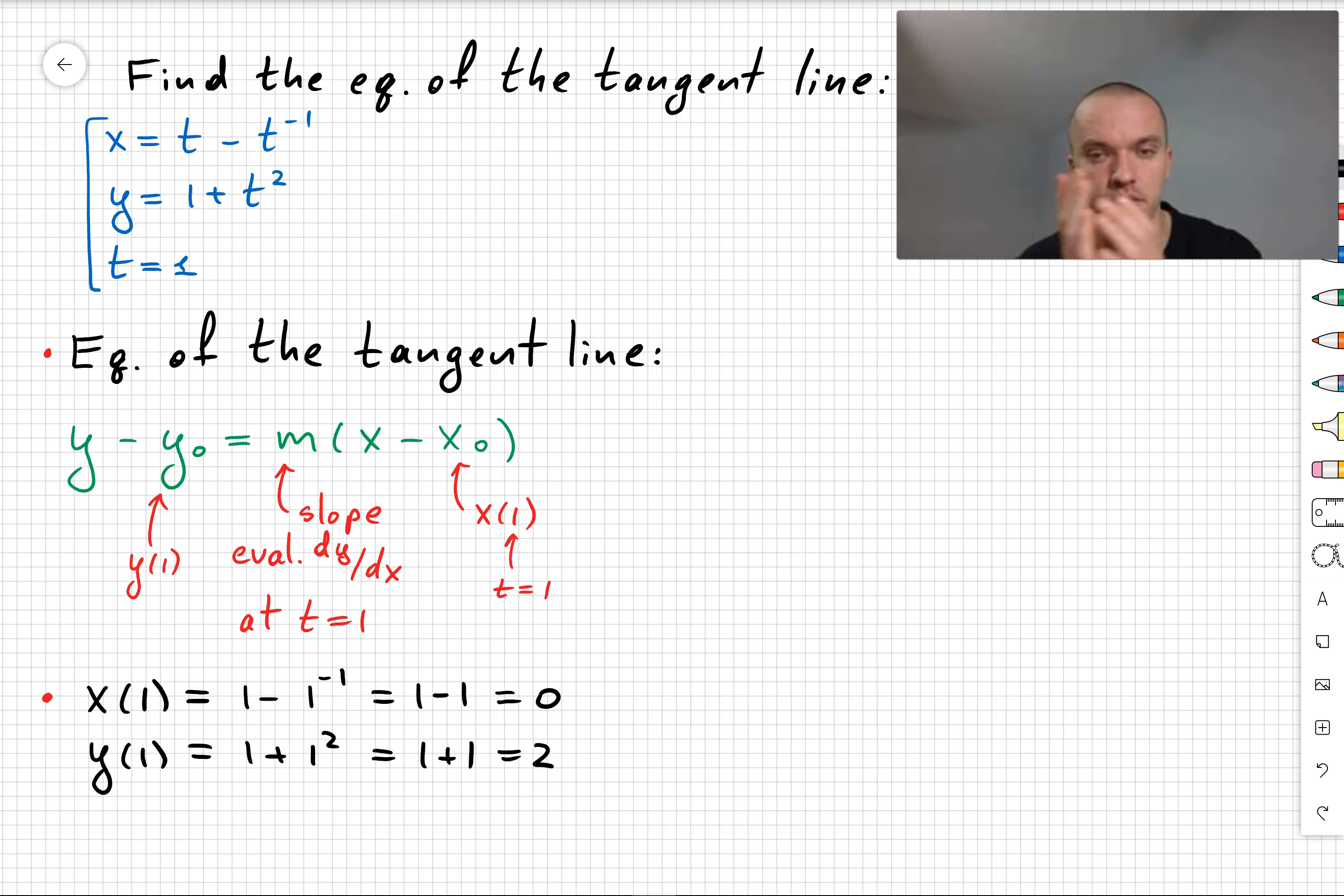Our next step is to find x0 and y0. We take t equals 1 and plug it into x and y. As you can see, x is 1 minus 1 equals 0, and y is 1 plus 1 equals 2. So we obtain the point (0, 2).